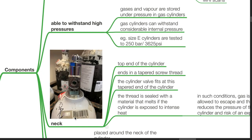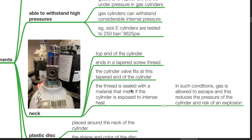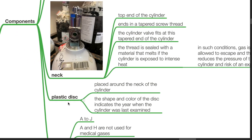The neck of a gas cylinder is the top end of the cylinder. It ends in a tapered screw thread. The cylinder valve fits at this tapered end of the cylinder. The thread is sealed with a material that melts if the cylinder is exposed to intense heat. In such situations, gas is allowed to escape and this reduces the pressure of the cylinder and reduces the risk of an explosion. A plastic disc is placed around the neck of the cylinder. The shape and colour of the disc indicates the year when the cylinder was last examined.